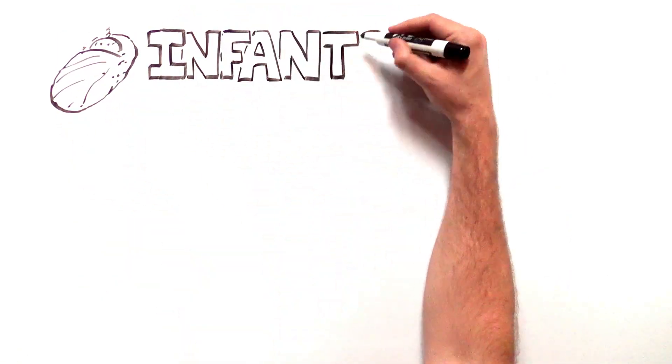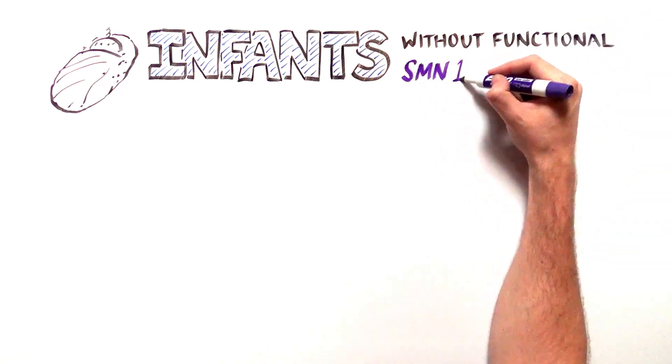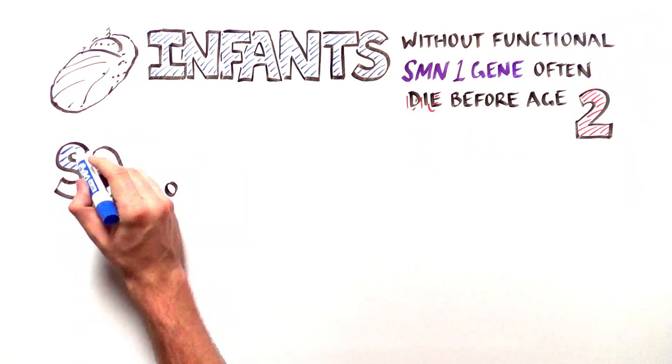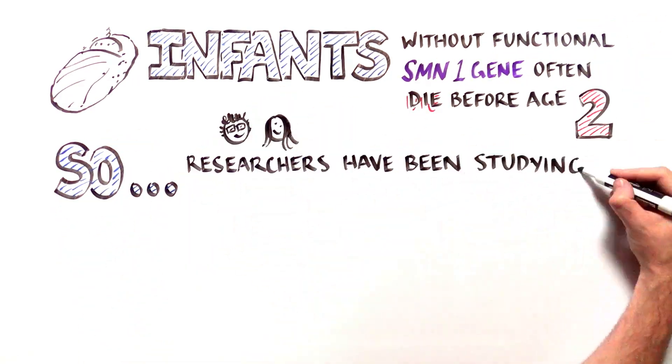Infants born with the most severe form of SMA often don't make it to their second birthday. But researchers have been studying how to fix this splicing problem.